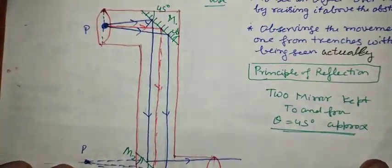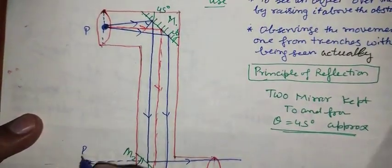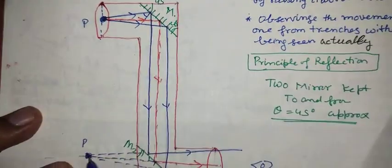So, the image of the object P is formed of same size, just below to it.